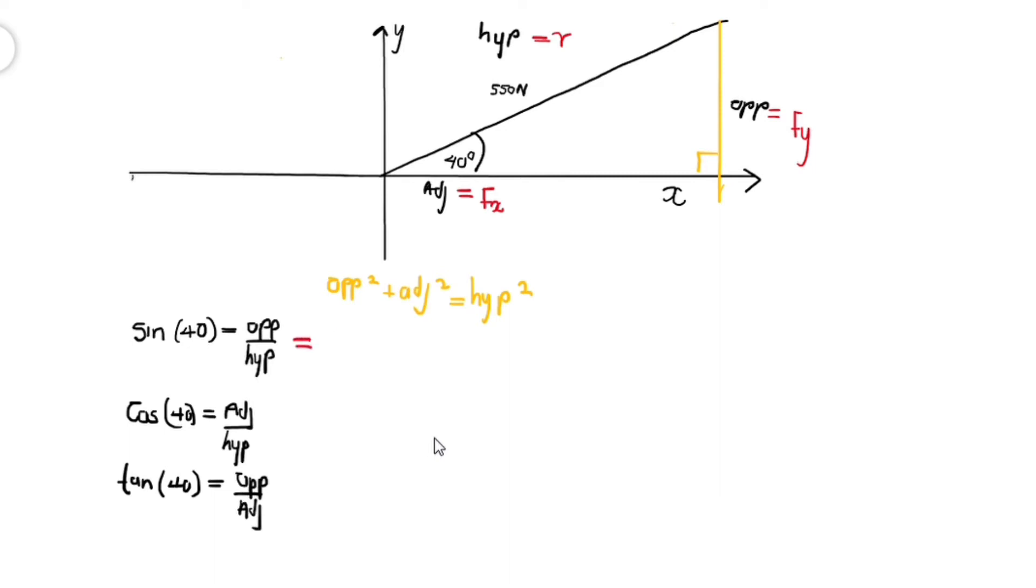This can further be expanded by just writing it simpler and saying Fy over r. We can write this further for ourselves. I'm going to use math functions, so I'm going to say r sine 40 can be equated to Fy, and this is going to be r cosine 40 can be equated to Fx.